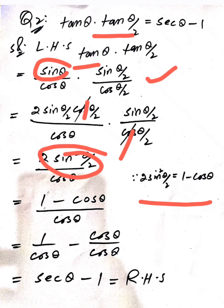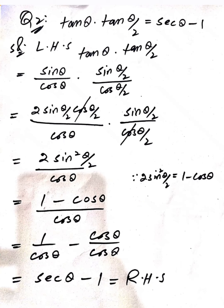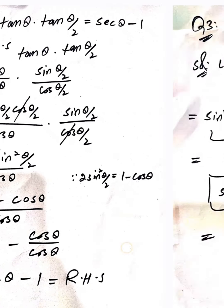So we have (1 - cos θ) / cos θ. Splitting the fraction: 1/cos θ - cos θ/cos θ. Here cos θ cancels in the second term, giving us sec θ - 1, which is our required result.